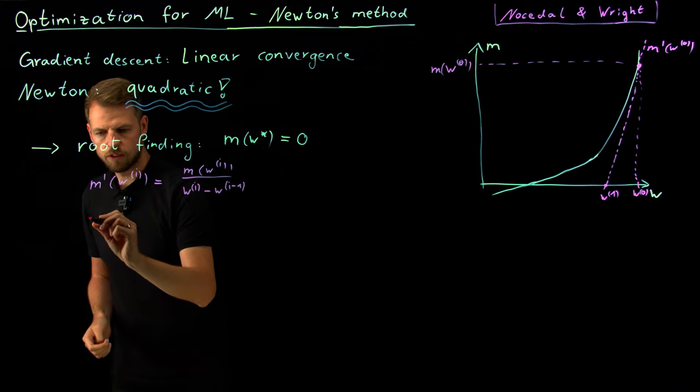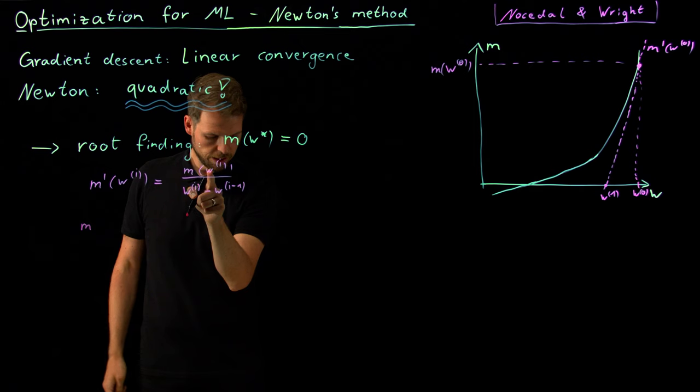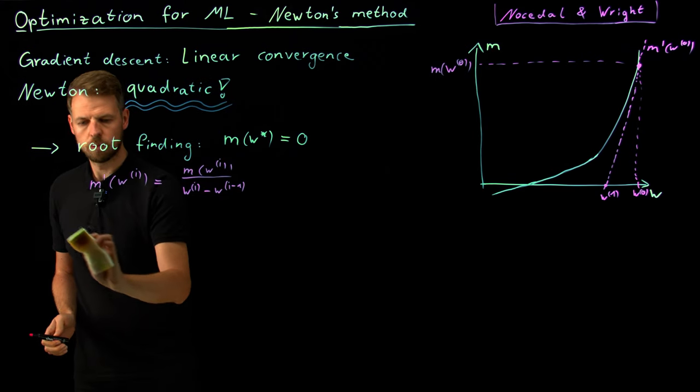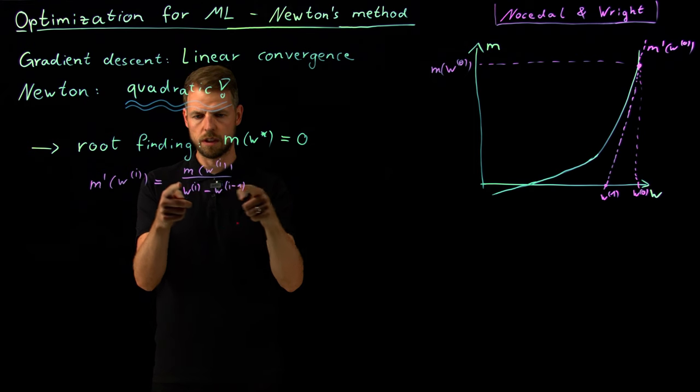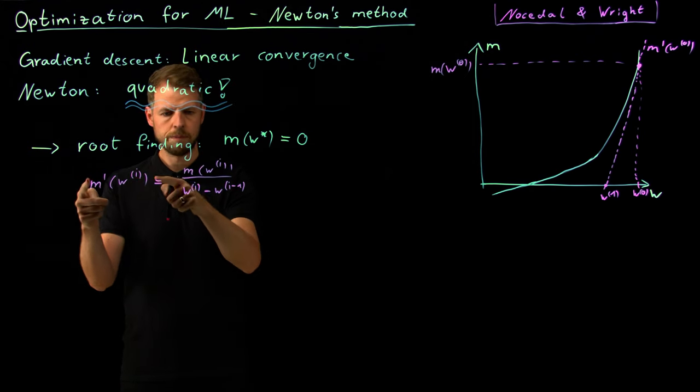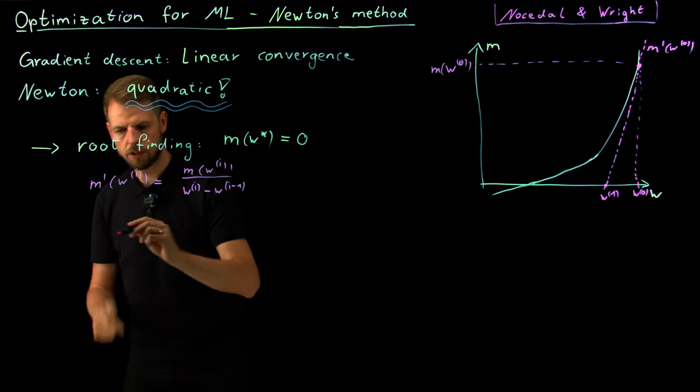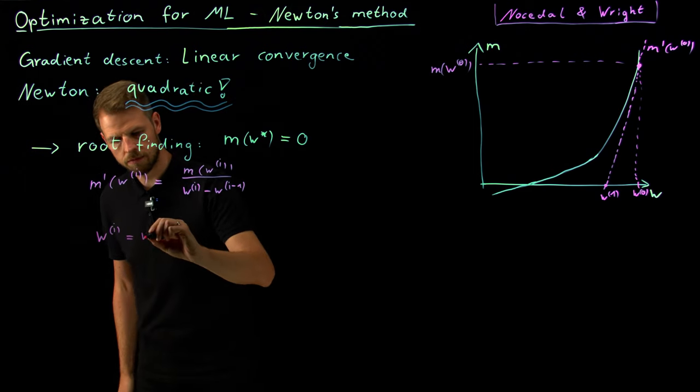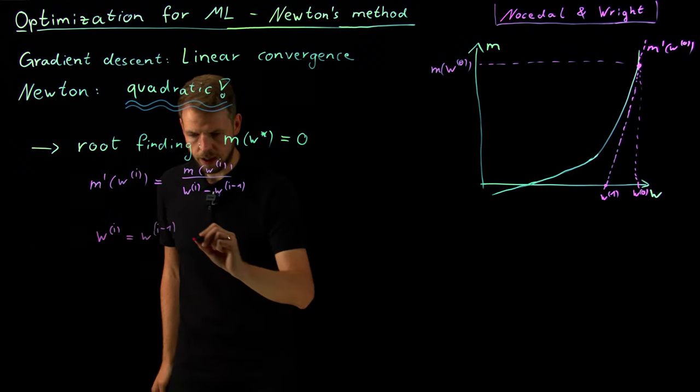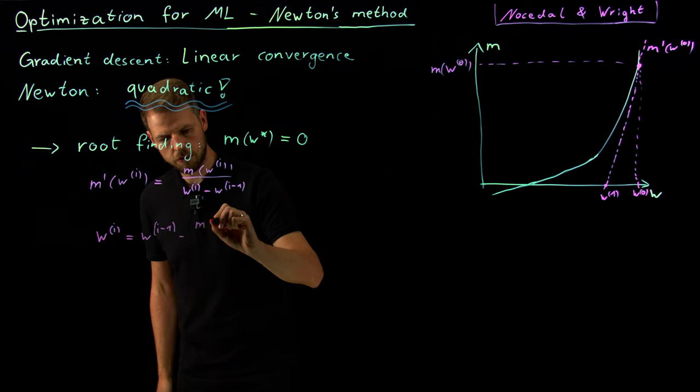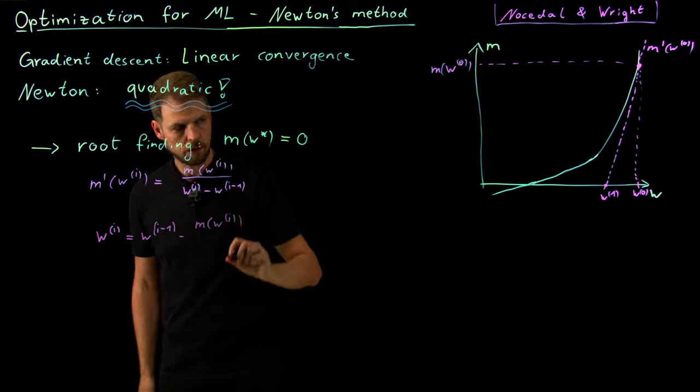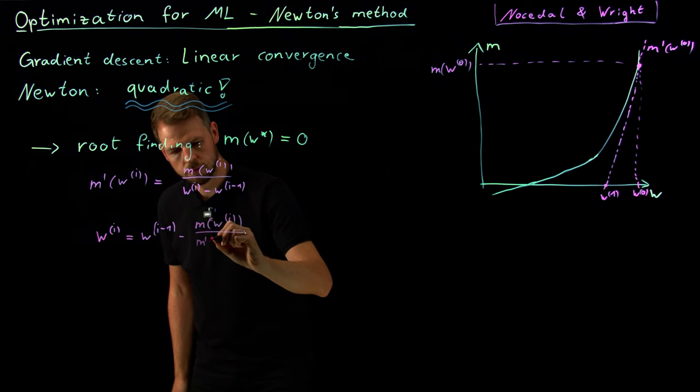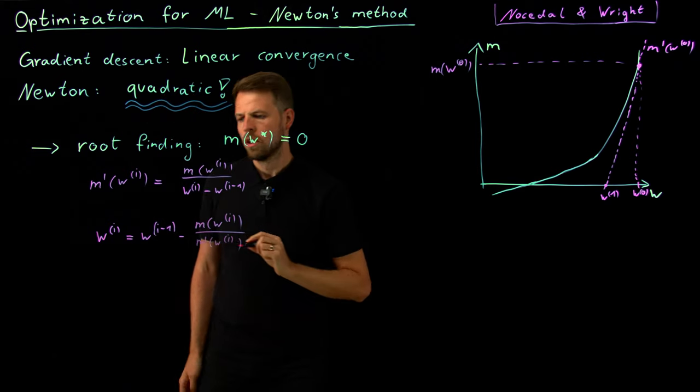And now you see that we can simply rephrase this in terms of finding the update. So what we have now is, I'm going to multiply with the difference and divide by the M, and then put this to the other side. So what I'm going to get is, W I is given by W I minus one minus M of W I divided by the slope.